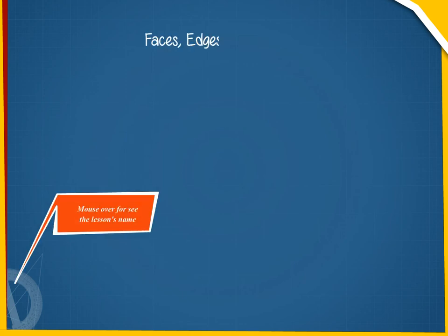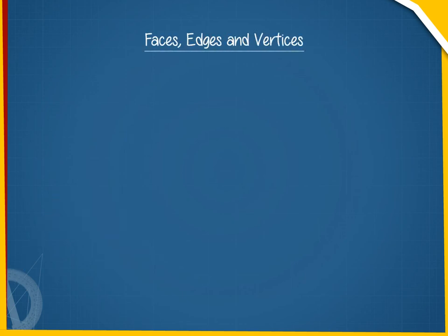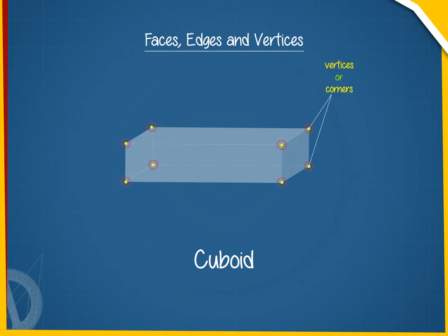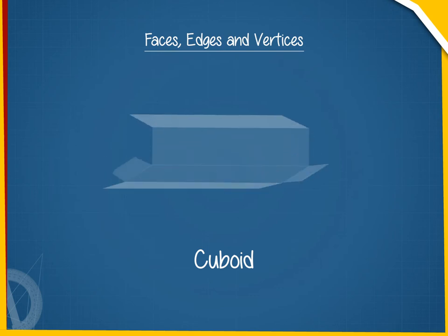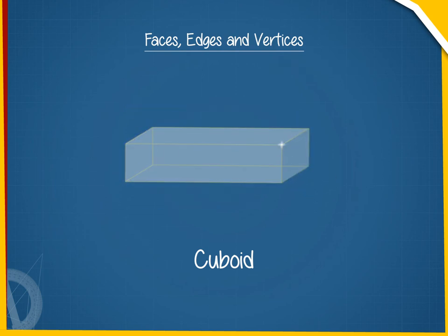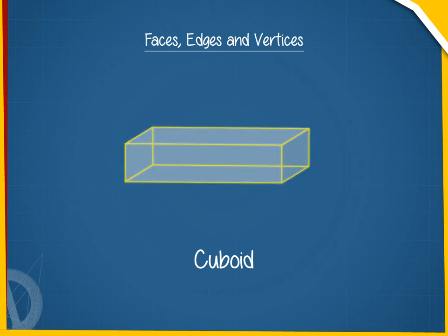Faces, edges and vertices. Here is a cuboid. This cuboid has 8 vertices or corners, 6 faces or surfaces and 12 edges. All the edges are straight and all the faces are flat.